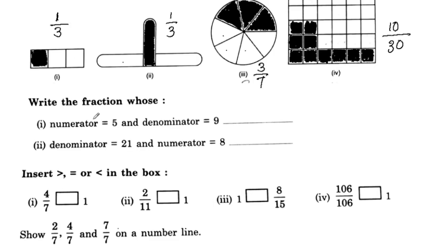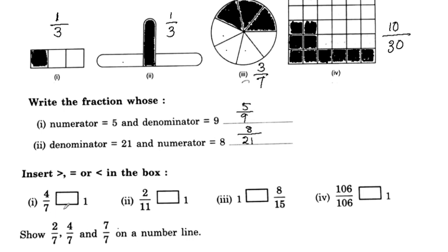Next, write the fraction whose numerator is 5 and denominator is 9 — fraction is 5 by 9. Denominator is 21, numerator is 8 — fraction is 8 by 21. Numerator is 8, denominator is 9, and another with denominator 7 — that gives 4 by 7.